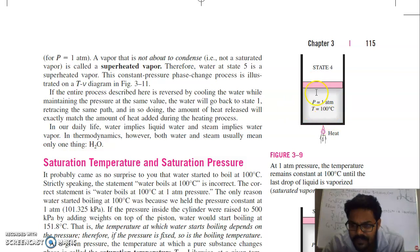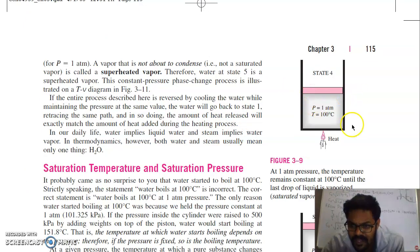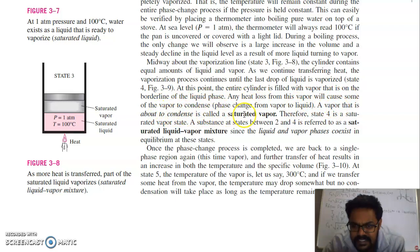This is your vapour here — the liquid is completely converted into saturated vapour. At the end of the process you will get vapour at 1 atmosphere and 100 degree Celsius, meaning complete liquid has changed into vapour. Any heat loss from this vapour will cause some of the vapour to condense. A vapour that is about to condense is called saturated vapour.